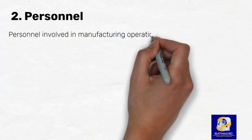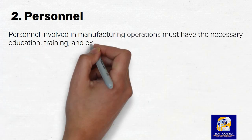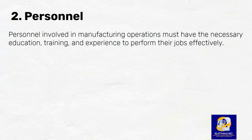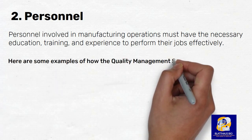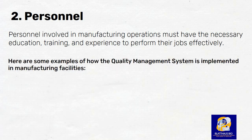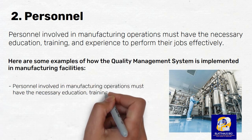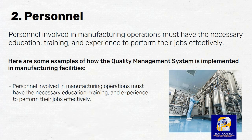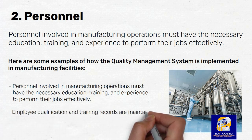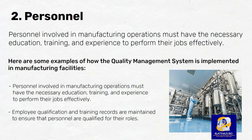Number 2: Personnel. The second principle of GMP is the qualification and training of personnel. Personnel involved in manufacturing operations must have the necessary education, training, and experience to perform their jobs effectively. Examples of personnel qualifications include education, experience, and training records. Employee qualification and training records are maintained to ensure that personnel are qualified for their roles.